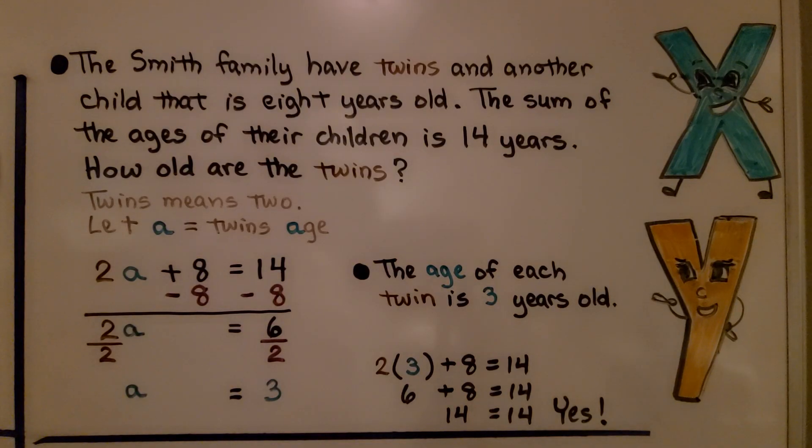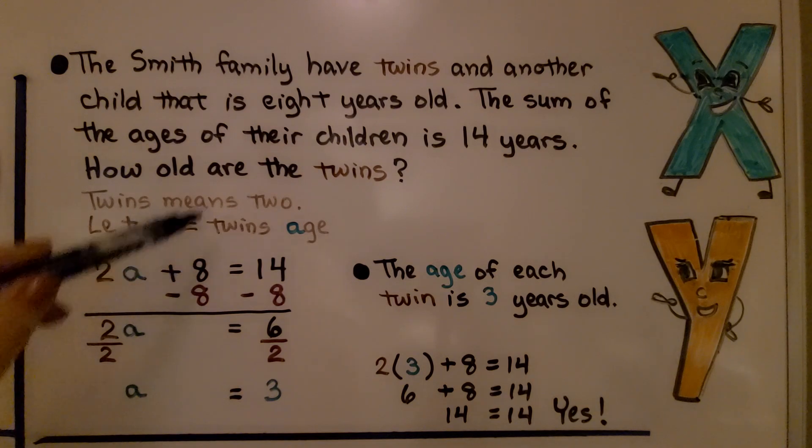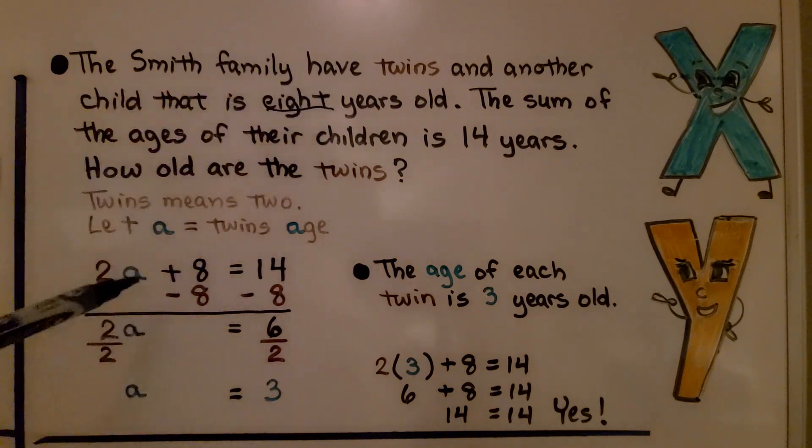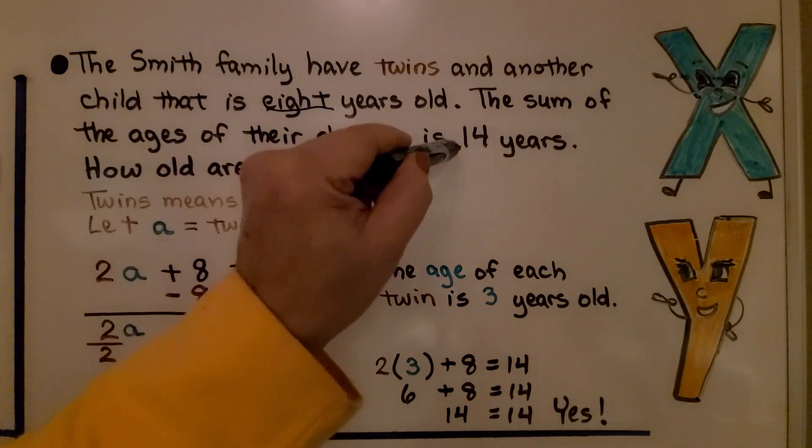Here's another problem. The Smith family have twins and another child that is 8 years old. The sum of the ages of their children is 14 years. So how old are the twins? Remember, twins means 2. We're going to let A equal the twins' age. If we have twins and we're trying to find their age, that's 2 times the age of the twins plus the 8 years of their other child equals 14 years.